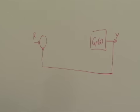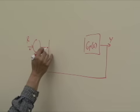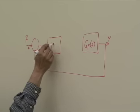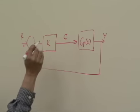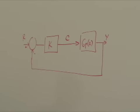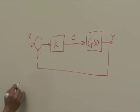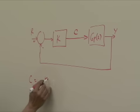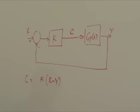It's compared to a reference input R. The error is fed through a gain amplifier K which produces an output which is then sent to the plant and we call that C. The key equation here is C equals K times R minus Y. We'll be coming back to this one.